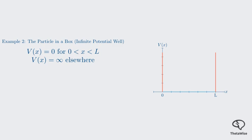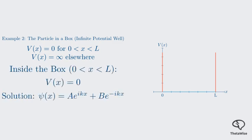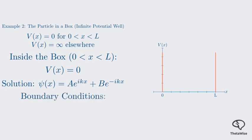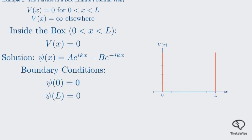Since the potential is zero inside the box, the TISE there is the same as for the free particle. So the general solution inside the box is also the same: ψ of x equals A times e^(ikx) plus B times e^(-ikx). But now we have a crucial condition, boundary conditions. Because the walls are infinitely high, there is a zero probability of finding the particle there. This means the wave function must be zero at the edges of the box. So, we must have ψ of 0 equals zero, and ψ of L equals zero. These are the boundary conditions that will determine the specific solutions.